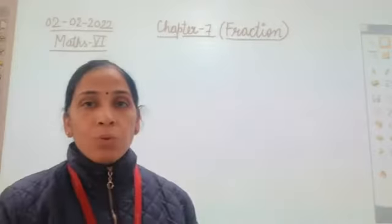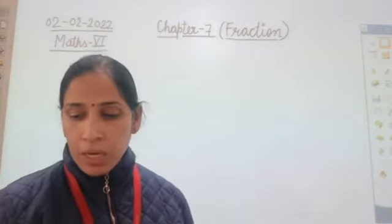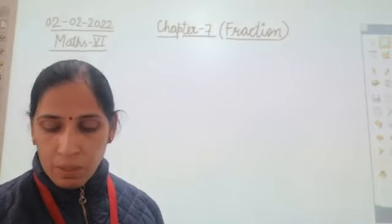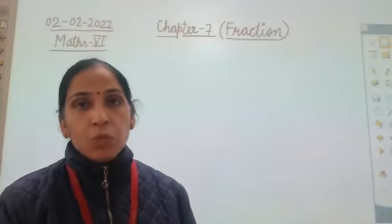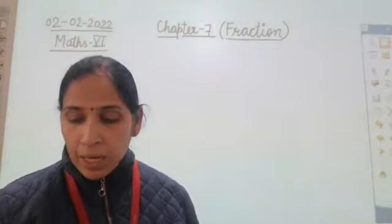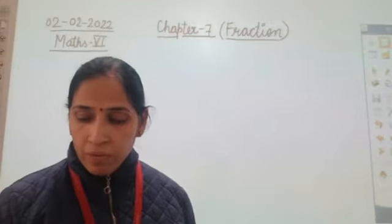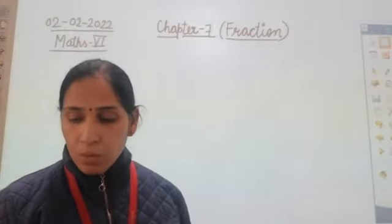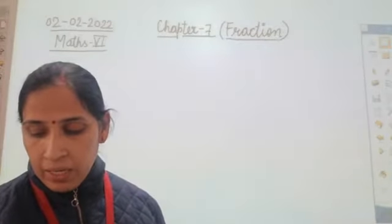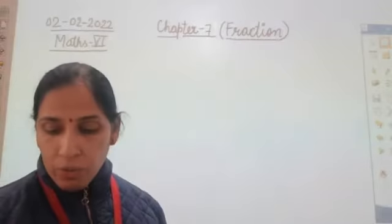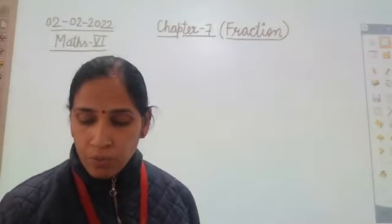Yesterday we finished some questions and today we are going to start with some more word problems. Naina was given 1 and 1/2 piece of cake and Nazma was given 1 and 1/3 piece of cake. Find the total amount of cake given to both of them.